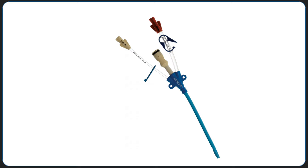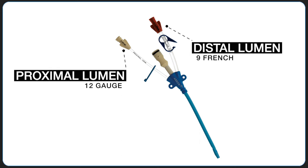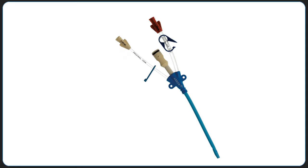A multi-lumen access introducer, or MAC introducer, is a device with two infusion ports: a 9-French brown distal lumen and a 12-gauge white proximal lumen. It's important to note that if a catheter, such as a Swan-Ganz, is inserted into the introducer, the flow rate of the brown distal lumen is decreased significantly.